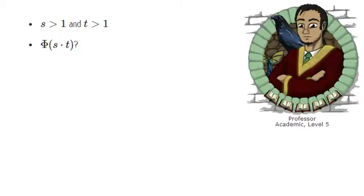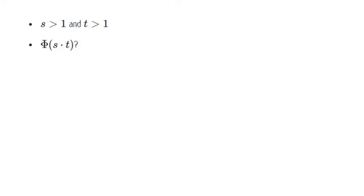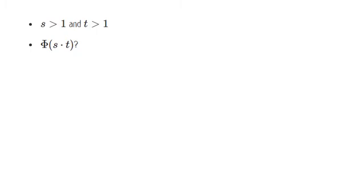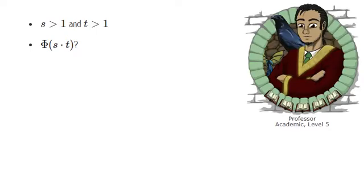To find phi of s times t, what do we have to count? We have to count up all the numbers less than and relatively prime to s times t. Exactly, but I propose that instead we count the numbers that are relatively prime to both s and t.